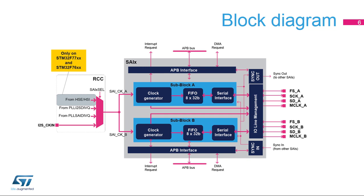The SAI is composed of two independent sub-blocks, sub-block A and B. Each sub-block has its own APB interface, clock generator, FIFO buffer, DMA interface, and interrupt interface. Each sub-block can be configured in receiver or transmitter mode and in master or slave mode with its own protocol. Internal and external synchronization allows two sub-blocks to be synchronized, or two SAI interfaces to be synchronized.